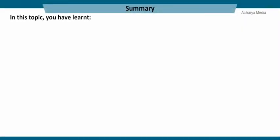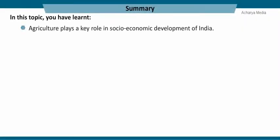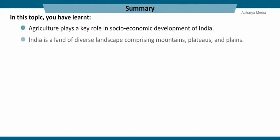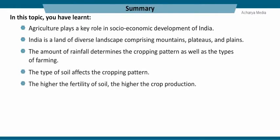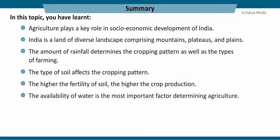In summary, agriculture plays a key role in the socio-economic development of India. India is a land of diverse landscape comprising mountains, plateaus, and plains. The amount of rainfall determines the cropping patterns as well as the types of farming. The type of soil affects the cropping pattern — the higher the fertility of the soil, the higher the crop production. The availability of water is the most important factor determining agriculture.